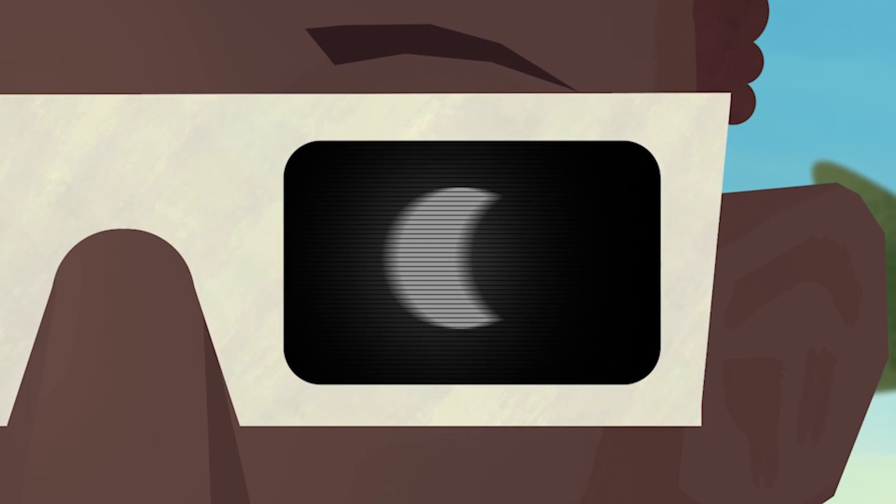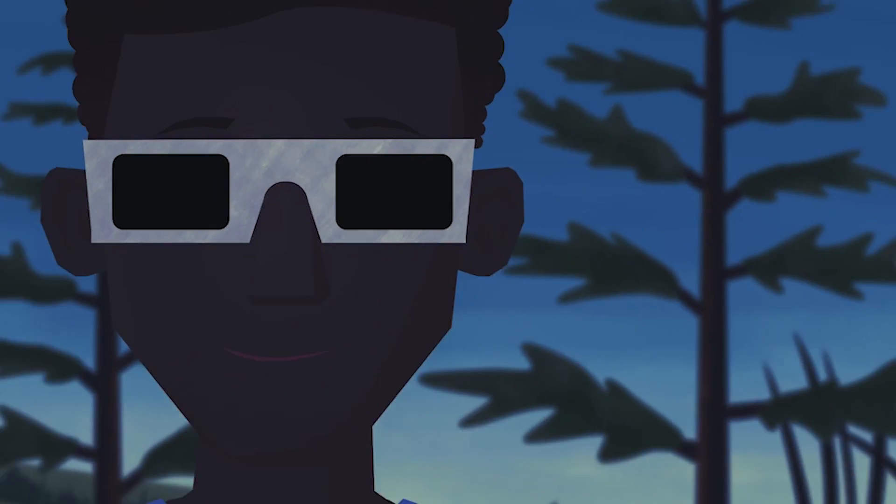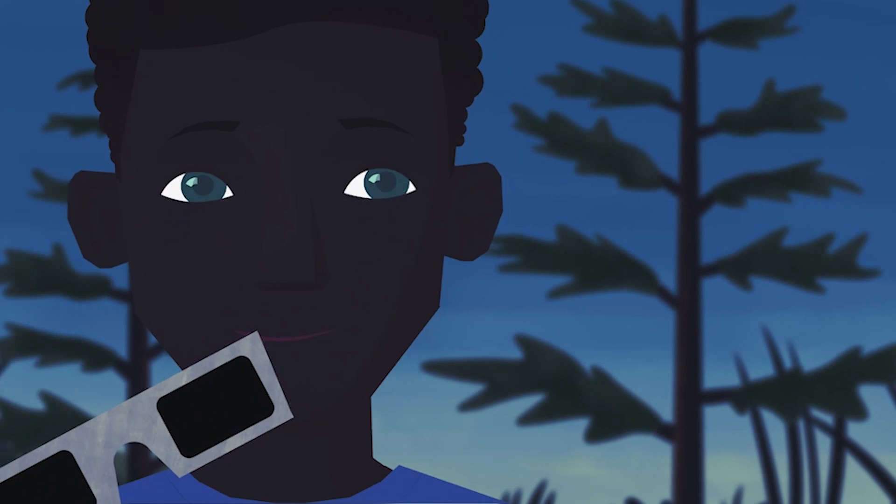During an eclipse which isn't total, there are still things you can see. One thing is that the light looks strange. The more of the sun is covered, the stranger it looks, because it looks dim.